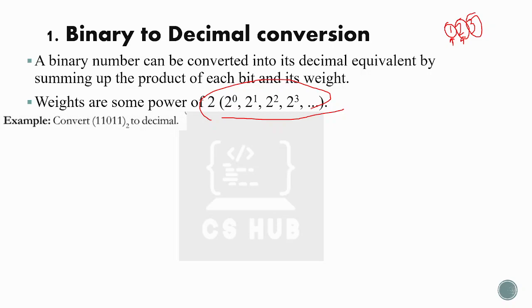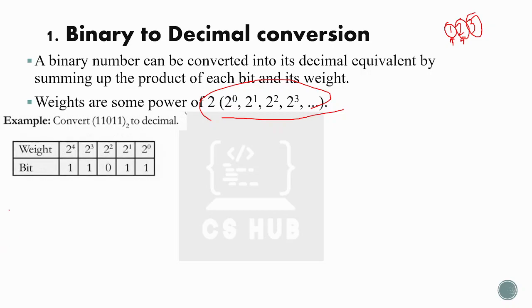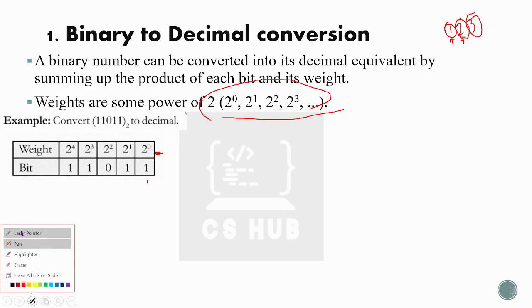For example, convert 11011₂ to decimal. We set up a table with bits 1, 1, 0, 1, 1. The rightmost bit (least significant bit) has weight 2⁰, then 2¹, 2², 2³, 2⁴ going left. So: 1×2⁴ + 1×2³ + 0×2² + 1×2¹ + 1×2⁰. Any number raised to 0 equals 1. So 2⁴=16, 2³=8, 2¹=2, 2⁰=1.